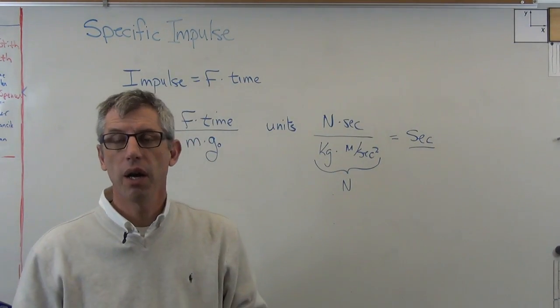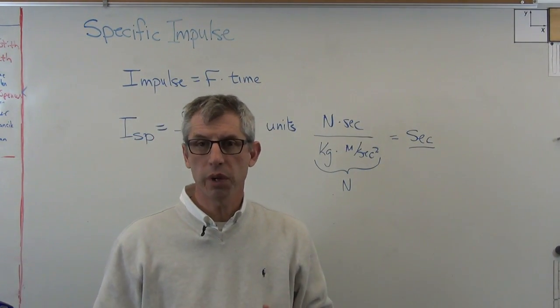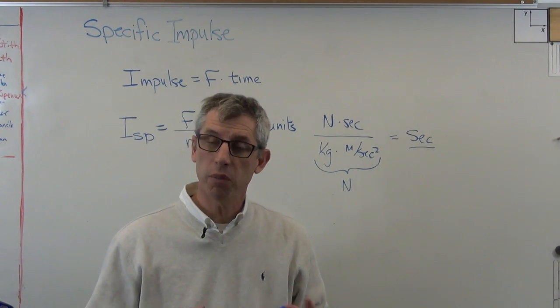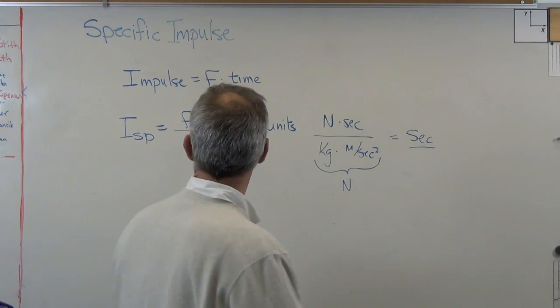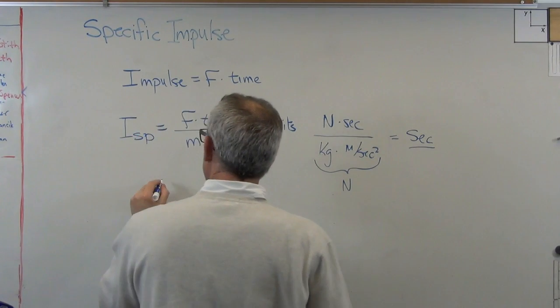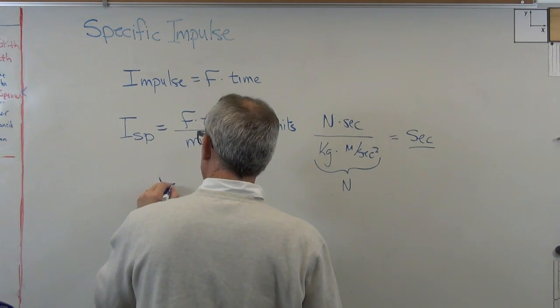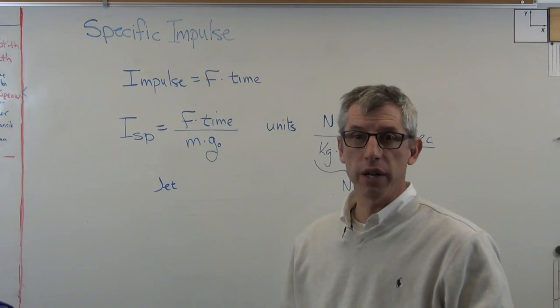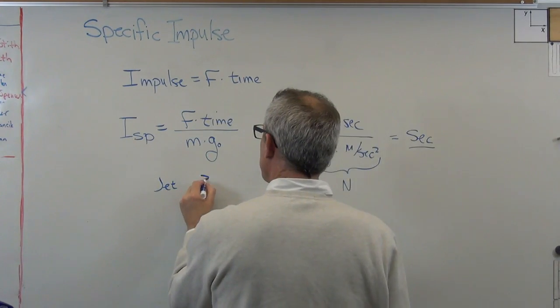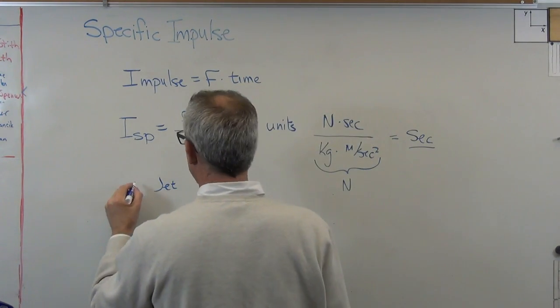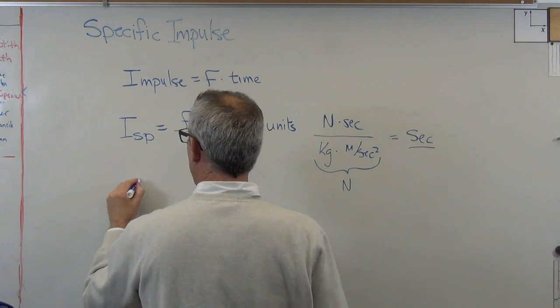So that cancels out, and your units turn out to be seconds. So specific impulse of an engine, and it's usually related to the fuel use as well, is expressed in seconds. All right, so if you want some examples for a jet engine, an efficient turbo fan like you'd find on an airliner, specific impulse is about 3,000 seconds.